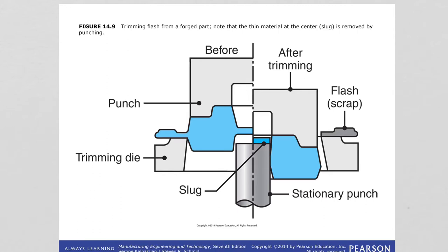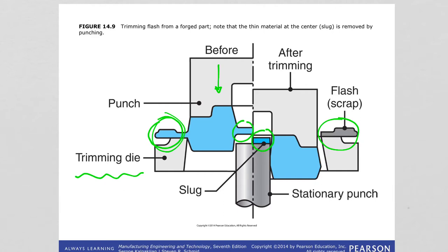Here it is illustrated how flash trimming is done from a forged part. There is the flash, and you use a trimming die — you punch in this direction to cut the flash away as scrap. The thin material at the center is called the slug, which is also removed by punching.